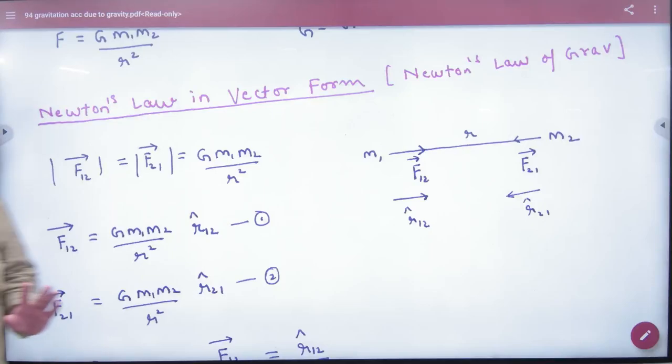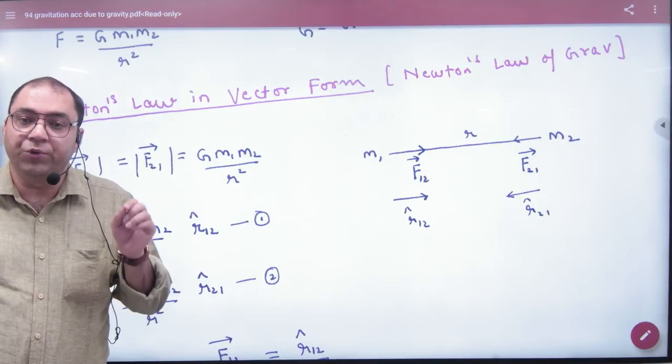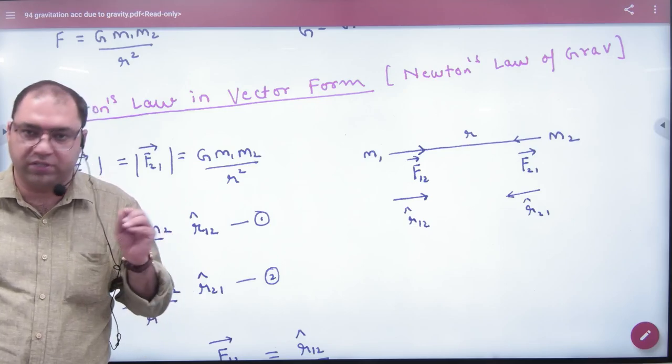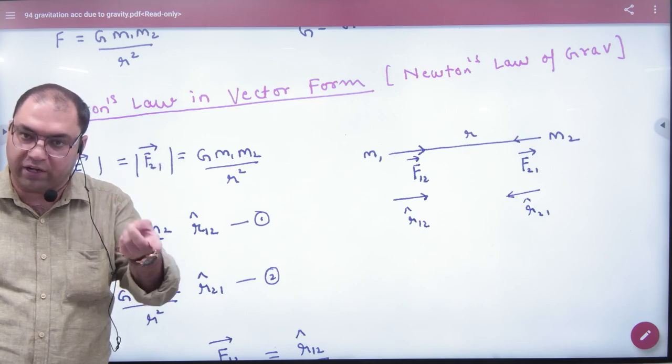To write Newton's law in vector form, why do you write it? Because Newton's gravitational formula gives us force. Force is not scalar, force is vector, so you have to write it in the vector form.